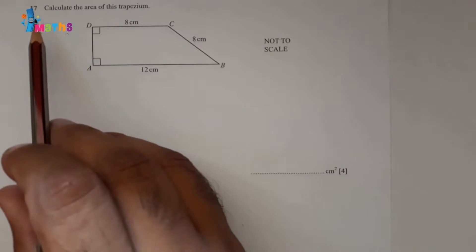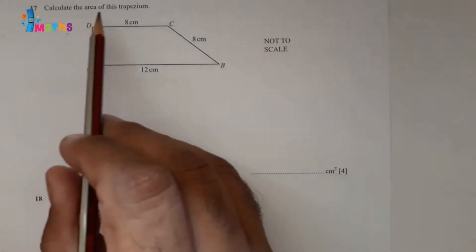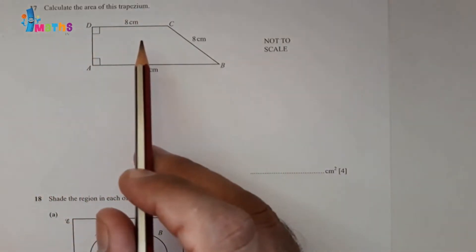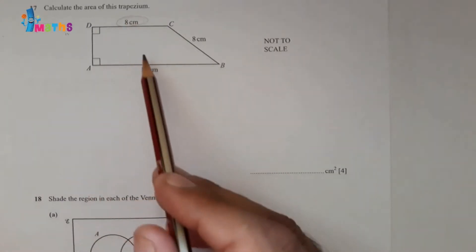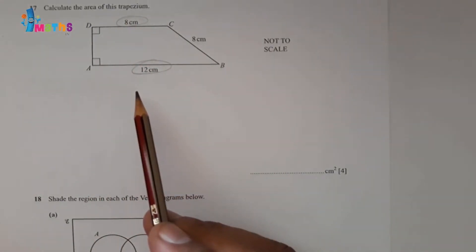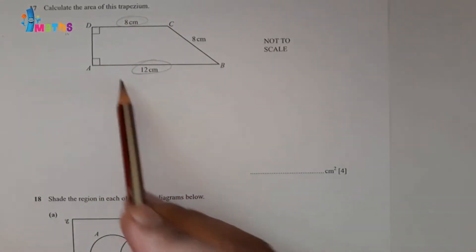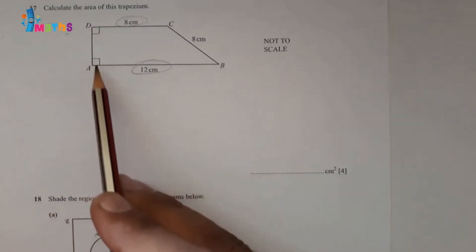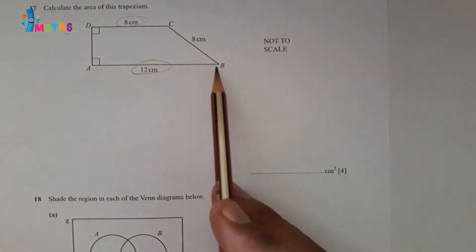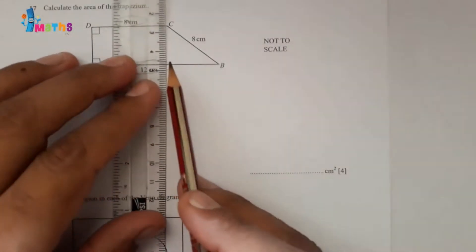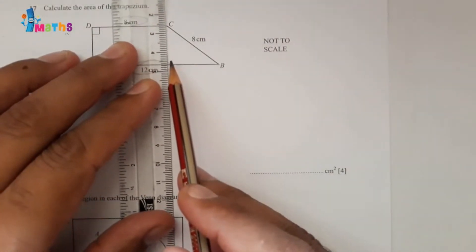Question number 17. Calculate the area of this trapezium. The provided trapezium has one side 8 centimeters and the other side 12 centimeters. We need the perpendicular height AD, which is not provided — only the slanting height of 8 centimeters is given. So we will find the perpendicular height.